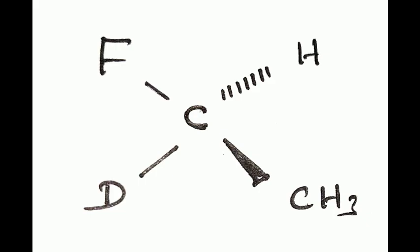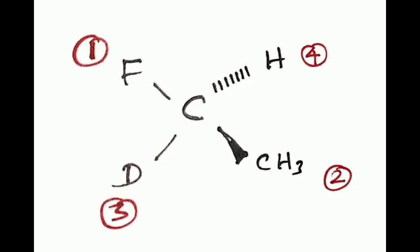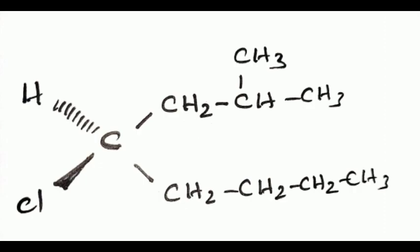Consider this compound. Here, F has atomic number 9, therefore priority 1. Methyl and ethyl both have carbon with atomic number 6. Deuterium D gets priority 3, and hydrogen is 4.